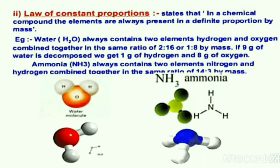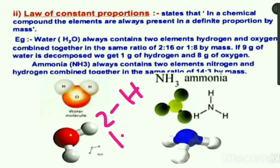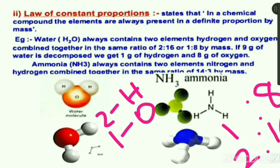For example, water. Water is composed of two elements — hydrogen and oxygen — with two hydrogen and one oxygen present. Water always contains these two elements, and hydrogen and oxygen combine in the ratio 1:8, or equivalently 2:16. The ratio 1:8 is the simpler form of 2:16.